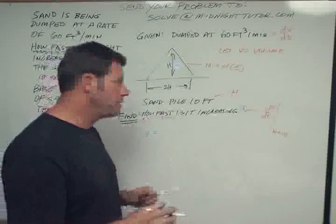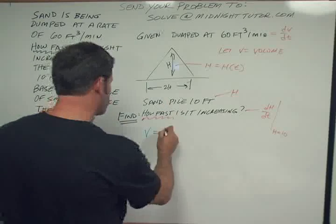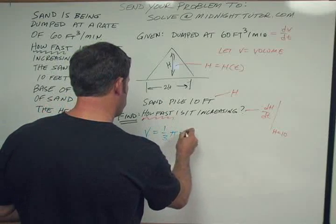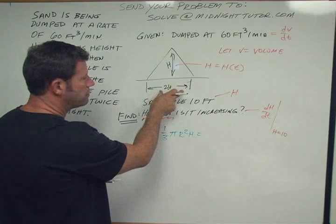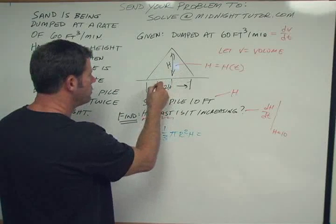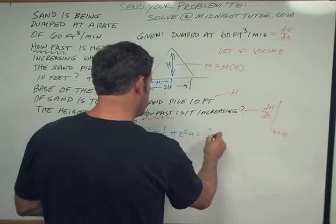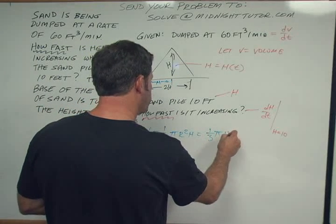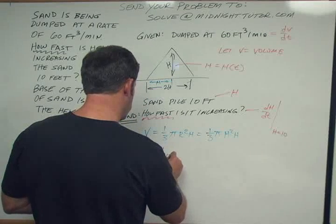But one thing we need to know is we need to know volume of a cone. And the volume of the cone is 1/3 π r² h. So in this case, in this case we have the base is twice the height, so then the radius would be the same as height. So this then becomes 1/3 π h² h, which is the same as 1/3 π h³.